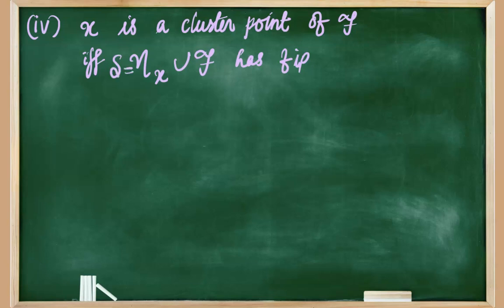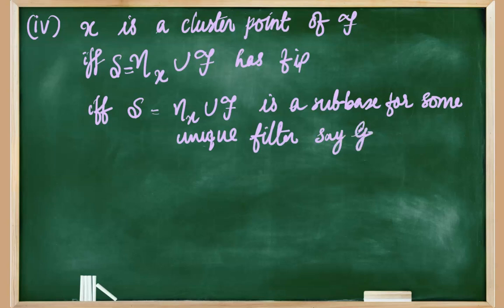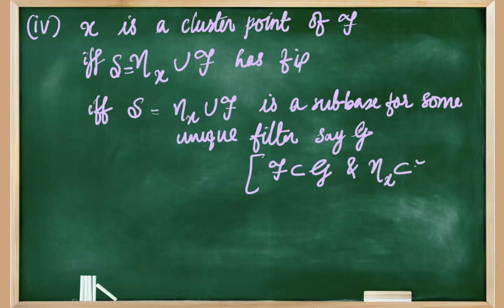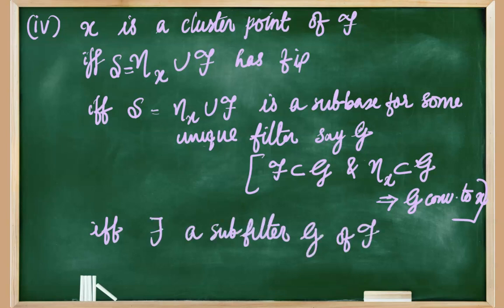Suppose we denote the family N(x) ∪ F as S. Then S has FIP if and only if S is a sub-base for some unique filter, say G. We can then observe that F will be a sub-family of G, so G is in fact a sub-filter of F. Also, N(x) is a subset of G, so G will converge to the point x. Thus we have obtained a sub-filter G of the filter F which converges to the same point x.